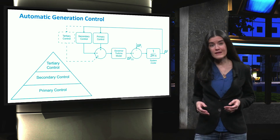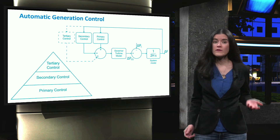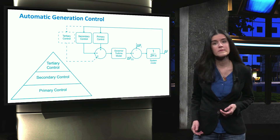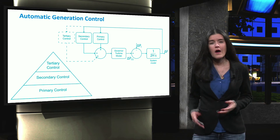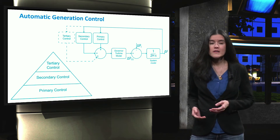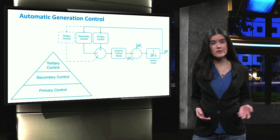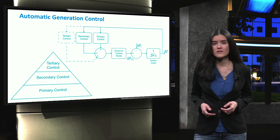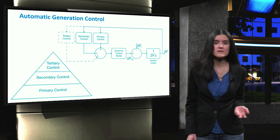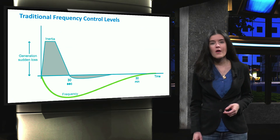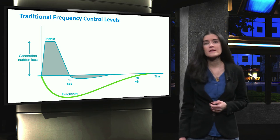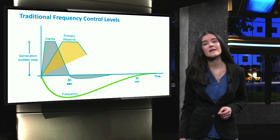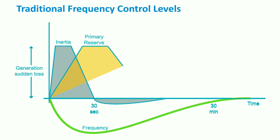In electrical power systems, the instantaneous active power balance must always be maintained between the power produced by the generators and the electrical demand. This condition must be satisfied under either normal operation or emergency operation. Under normal operation, power deviations exist due to either intermittent renewable electricity generation or continuous load fluctuations. Under emergency conditions, these deviations occur due to sudden outages of generation units, transmission lines, or loads. When an imbalance occurs, the system frequency deviates from its nominal value. To continuously restore the power balance in the system, primary control is automatically and locally activated, right after a contingency event takes place, in a decentralized manner.